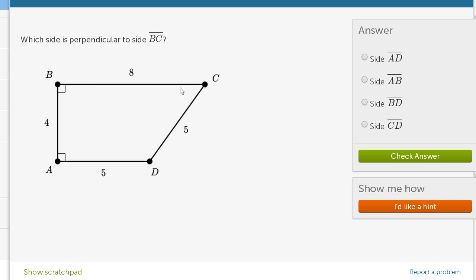And we see that BC intersects AB at a 90 degree angle. The symbol right over here represents a 90 degree or a right angle. So we just have to find side AB or BA. And that's right over here. Side AB is perpendicular to side BC.